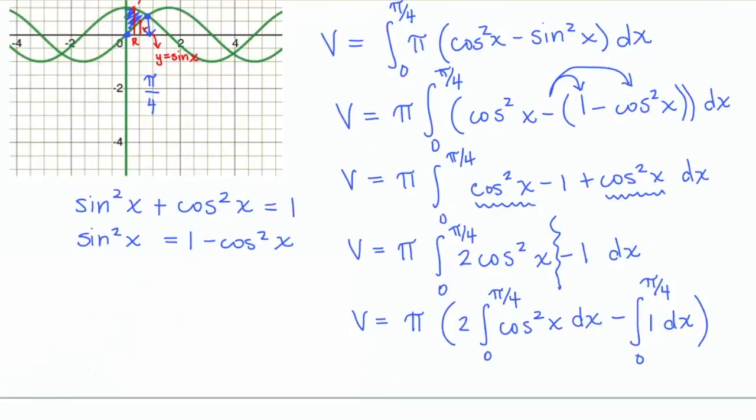Now since we're not here to actually practice integration, I'm going to go ahead and skip to the end. And it turns out if you work through this integration, you will get a volume that is equal to pi over 2 units cubed, which is approximately 1.5 something.